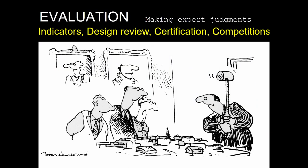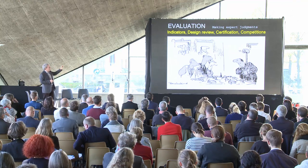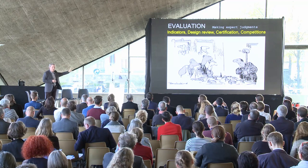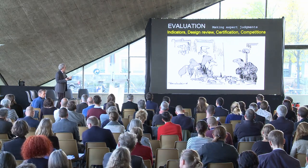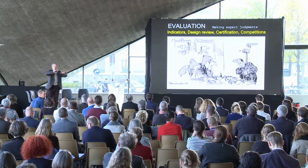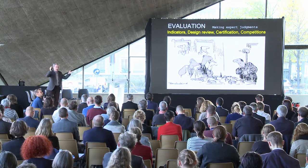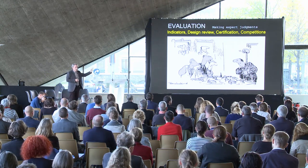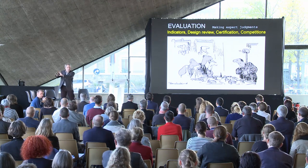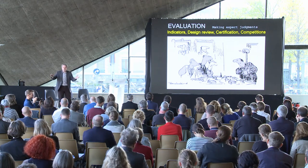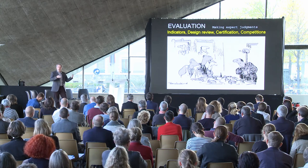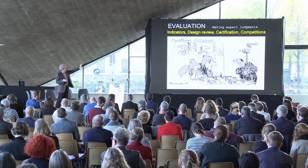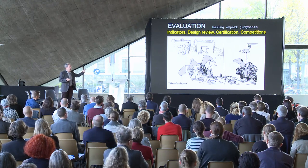Then a fourth set of tools we might call evaluation — where experts make judgements about actual projects. Yesterday we heard about the DQI, the Design Quality Indicator, which is a framework you can use to evaluate a particular project. Design review processes involve a jury having a discussion about a project and making recommendations. Different types of certification — this building meets this standard, so we'll give it a certificate saying it's a very sustainable building. And competitions — I hear you use those a lot here in Geneva. In the UK we hardly ever use competitions; we should use them much more. All of these are means of getting experts to make judgements about particular schemes or places.